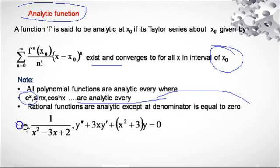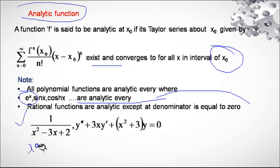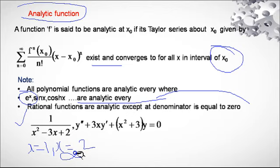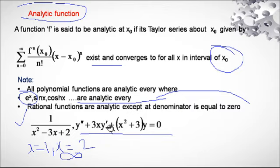All rational functions are also analytic except where the denominator is zero. For example, 1/(x² − 3x + 2): equating x² − 3x + 2 = 0 gives x = 1 and x = 2. Substituting these values gives infinity, so this function is analytic except at x = 1 and x = 2. For example, y'' + 3xy' + (x² + 3)y = 0, where P(x) = 3x and Q(x) = x² + 3, it is an analytic function.